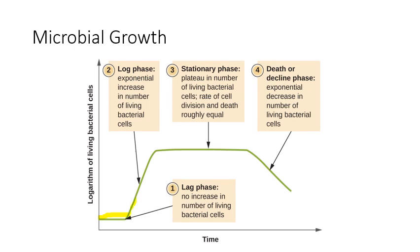The next phase is called the log phase, and this is a phase of logarithmic or exponential growth where the cell number is increasing like crazy. These cells are now used to their new environment and have made all the metabolic adjustments they need to maximize growth, and they're just reproducing like mad.